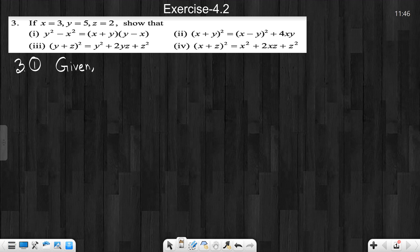Given x equals 3, y equals 5, and z equals 2. Now, the number of math is left-hand side. Let's write what we have to do. Left-hand side equals y square minus x square.